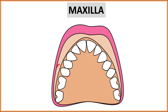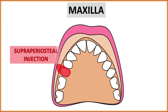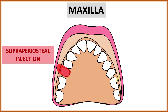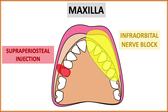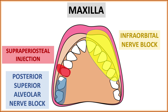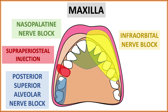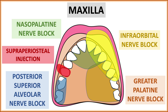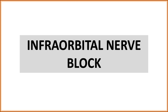In the maxilla, we have five types of nerve block. The first one is the infraorbital nerve block, which we will discuss in this video. Then we have supraperiosteal or local infiltration, already discussed in my previous video. Then we have the posterior superior alveolar nerve block (PSA), the nasopalatine nerve block, and the greater palatine nerve block — all three will be discussed in our next video.